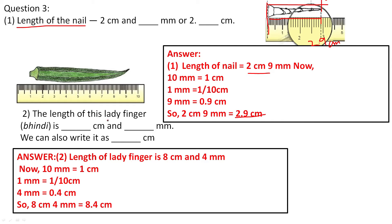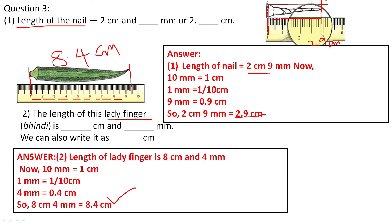Likewise, we can find the length of this lady finger. The lady finger is kept starting from 1 on the scale and ends further along. Counting from 1: 1, 2, 3, 4, 5, 6, 7, 8 centimetres, then 4 small lines — so 8.4 centimetre. The length of the lady finger is 8.4 centimetre, which is 8 centimetre and 4 millimetre. Since 1 millimetre is 1/10 centimetre, 4 millimetre = 0.4 centimetre, giving 8.4 centimetre.